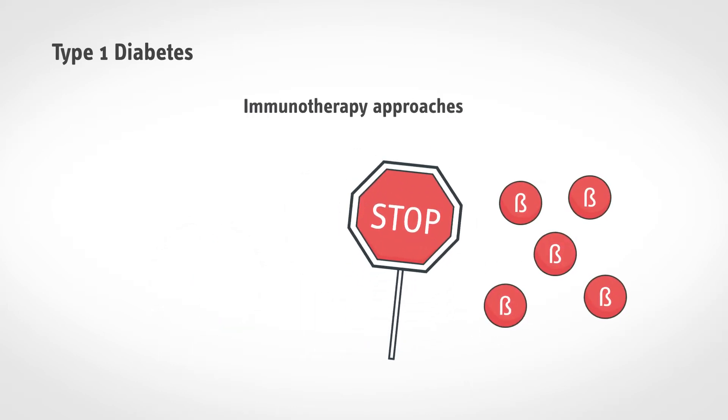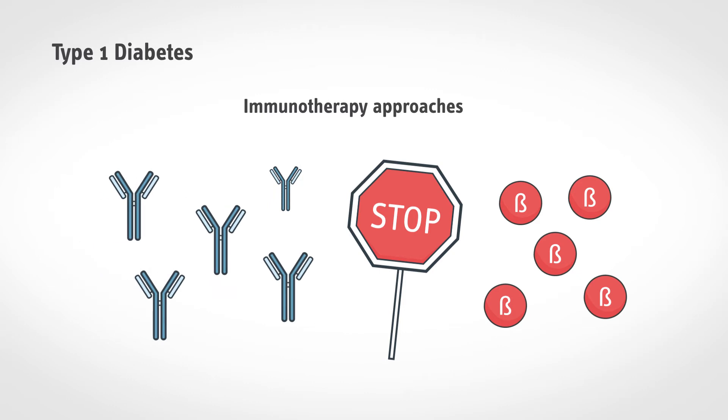Immunotherapy approaches try to prevent the destruction of beta cells, that is to prevent or at least curb the onset of the disease.